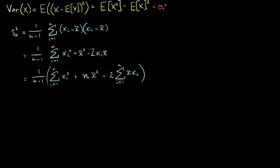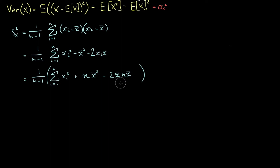Looking at the third term, x-bar doesn't depend on i, so we can bring it out the front. All that's left is the sum from i equals 1 to n of xi. If we take that sum and divide by n we get the sample mean, so the sum itself is n times x-bar. We can rewrite this term as minus 2 times x-bar times n times x-bar, which is minus 2n·x-bar squared.